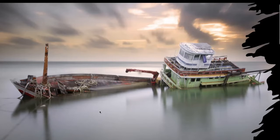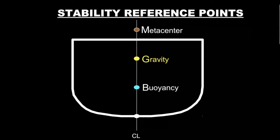Let's talk about the basics which are in play. To understand how the ship will not sink, we need to first define some reference points we'll be using to define the stability of the ship. We'll be talking about gravity, buoyancy, and there is probably a new term for you — metacenter.